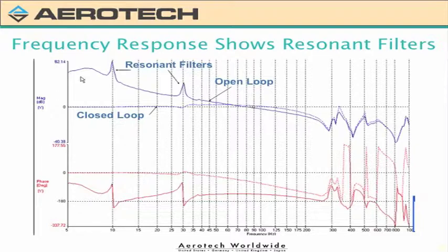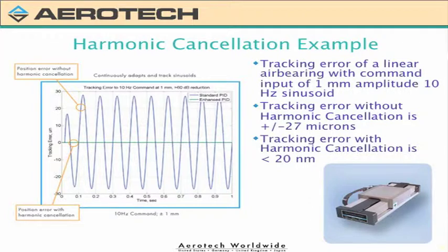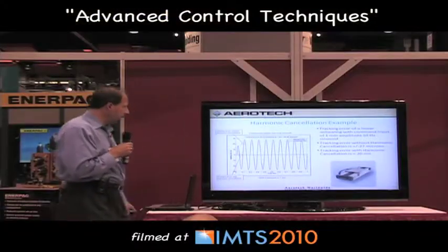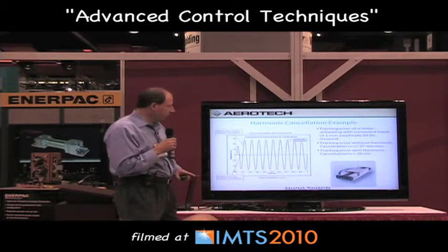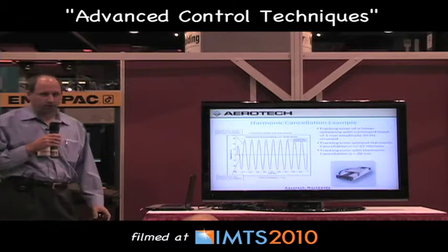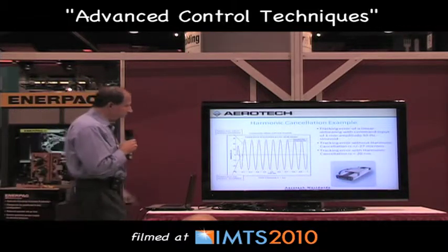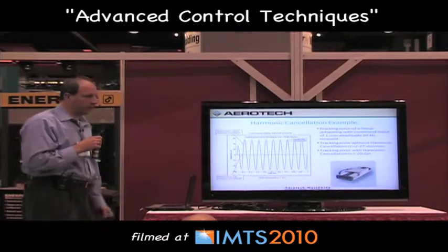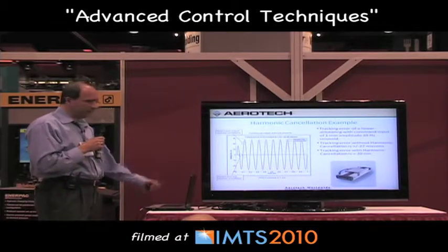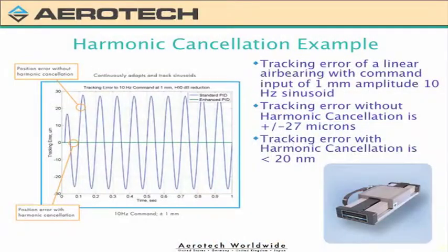Here's one more example using an air bearing, which removes friction and nonlinearities to show how well the technique works on a predictable system. I stimulate it with a sine wave at 10 Hz. With the harmonic cancellation filter off, there is about 27 microns of sinusoidal error. I then turn it on, and the resulting error — the green line that looks like a zero line — is less than 20 nanometers peak to peak. That's a 63 dB reduction in error.